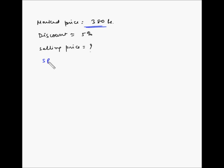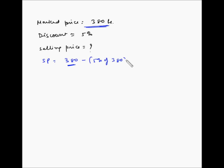The selling price will be equal to the marked price minus the discount that is being provided on the marked price. So selling price equals 380, which is the marked price, minus 5% of 380. That is 380 minus 5 divided by 100, multiplied by 380.